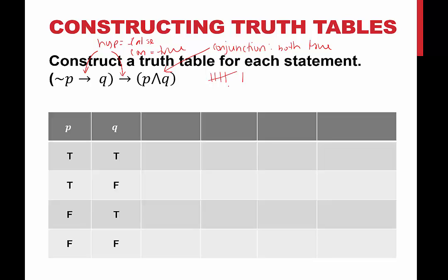And here we go — six columns. So what do I need? I need not p, then not p implying q, then p and q, and then I'm going to put the whole thing together: not p leading to q, implies p and q. So our truth table would look like this with the headings. Now let's fill it in. Not p has the opposite truth value of p, so that would be false, false, true, true.